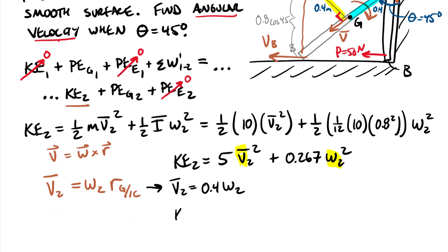Keeping in mind we were asked to find angular velocity, I'll put my kinetic energy 2 all in terms of angular velocity. Putting in this value for velocity, making sure to square it, I get 5 times 0.4 omega 2 squared plus 0.267 times omega 2 squared, which equals, pushing through a calculator, 1.067 omega 2 squared.